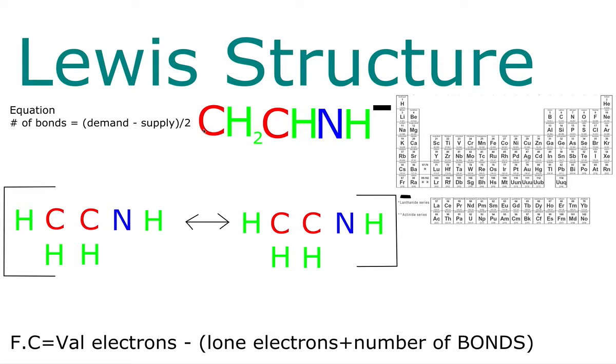In this video we will be constructing the Lewis structure for CH2CHNH-. I already have our atoms separated where they should be. The reason why I have this double-sided arrow is because these are resonances, and I'll show you which one is the better of the two. Make sure they're all enclosed in brackets, and you have your negative charge because this molecule has a negative charge on it.